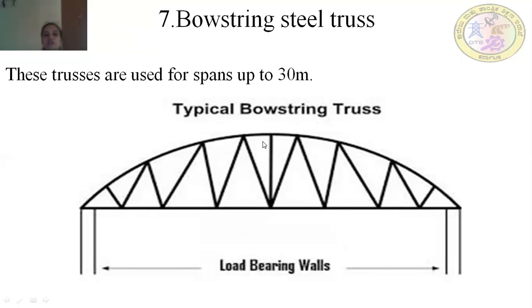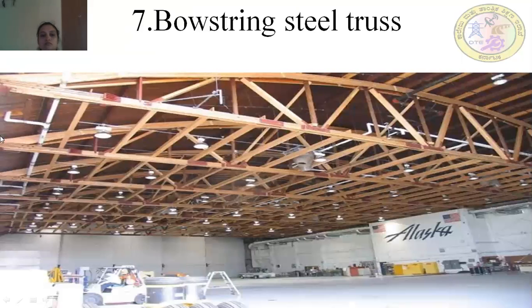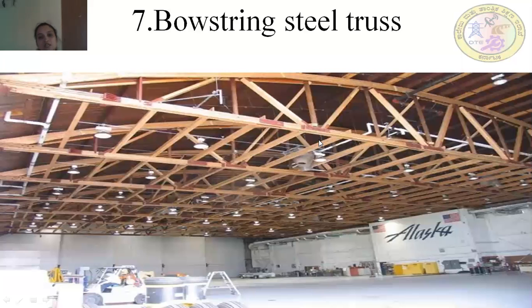The bow string truss has a curved top member, a horizontal member, diagonal members, and a combination of vertical members, all working together in the curved format.